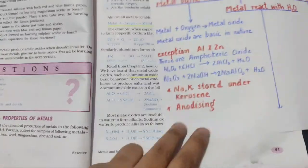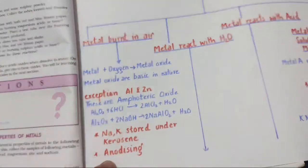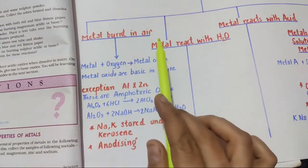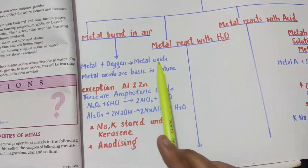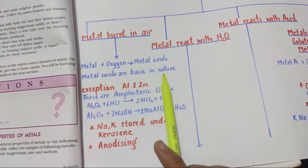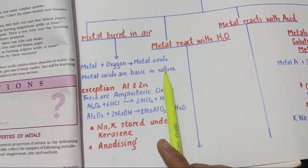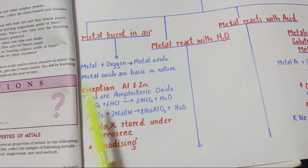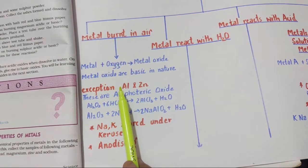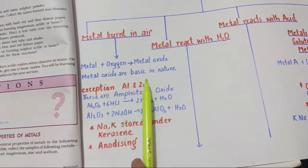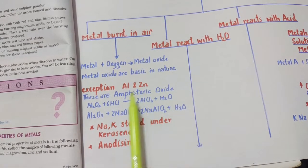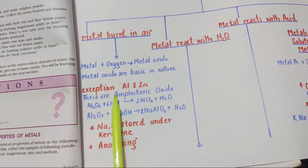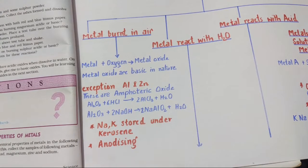To complete this section: when metal burns in air, it forms metal oxide; metal oxides are basic in nature. An exceptional property — in science, exceptions are very important. Aluminium and zinc are amphoteric oxides, so you must learn their reactions.